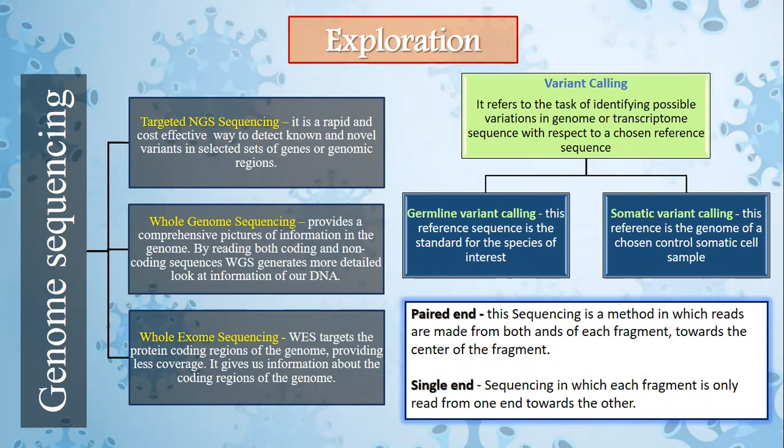Then we come to exploration — that is, preparation for analysis. We learned about different types of genome sequencing. Targeted NGS sequencing is a rapid and cost-effective way to detect known and novel variants in a selected set of genes or genomic regions. Whole genome sequencing provides a comprehensive picture of information in the genome by reading both coding and non-coding sequences, generating a more detailed look at our DNA. Whole exome sequencing targets the protein-coding regions of the genome, providing information about the coding regions only.